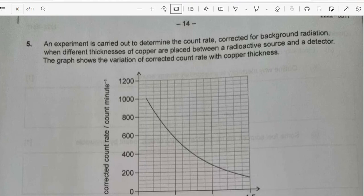The question here: an experiment is carried out to determine the count rate corrected for background radiation when different thickness of copper are placed between a radioactive source and a detector. The graph shows the variation of corrected count rate with copper thickness.